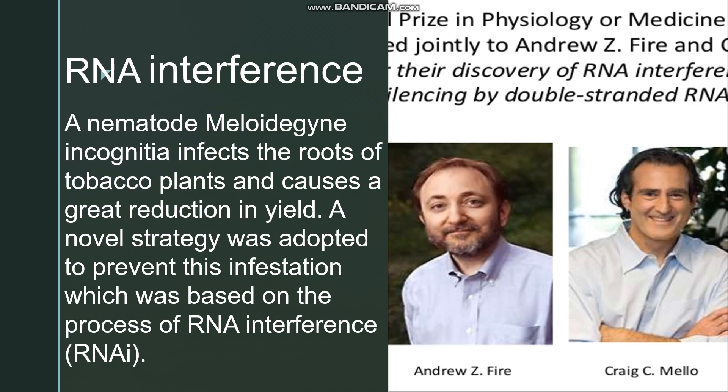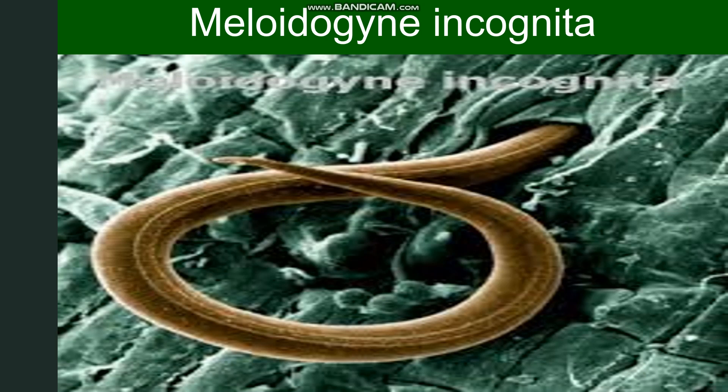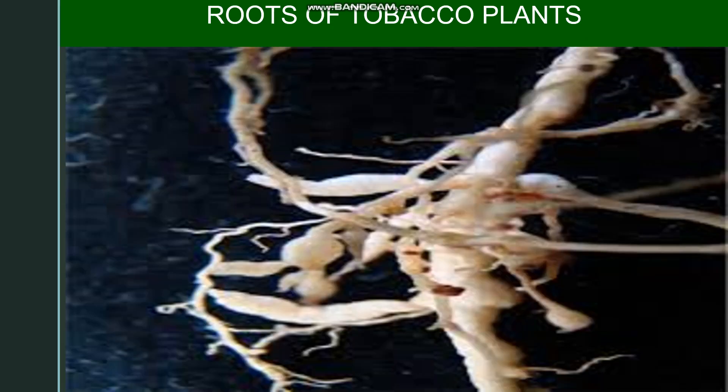A nematode, Meloidogyne incognita, infects the tobacco plants. This is the image of the nematode Meloidogyne incognita. This nematode infects the roots of tobacco plants and reduces the yield of these plants. Here you can see the roots of tobacco plants.